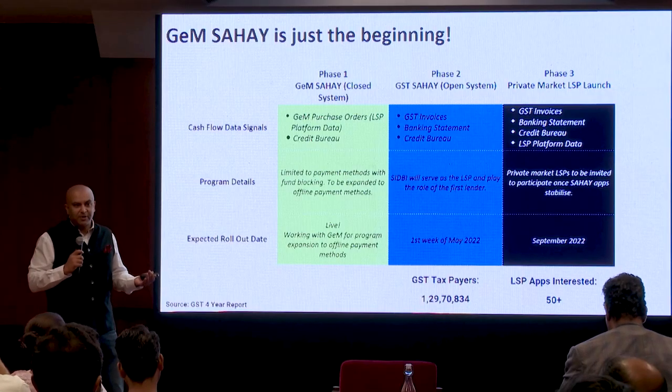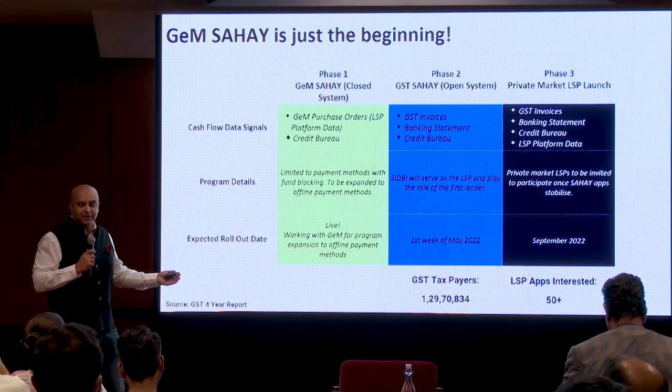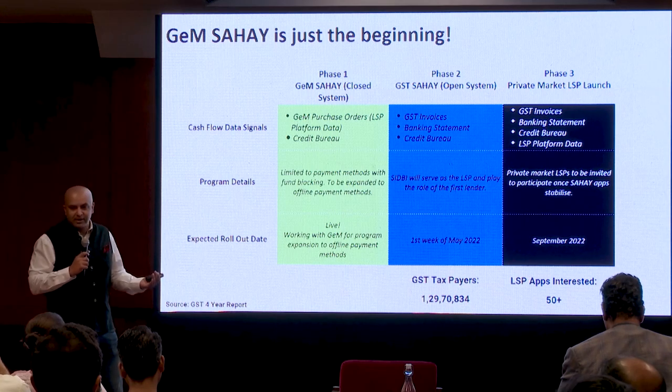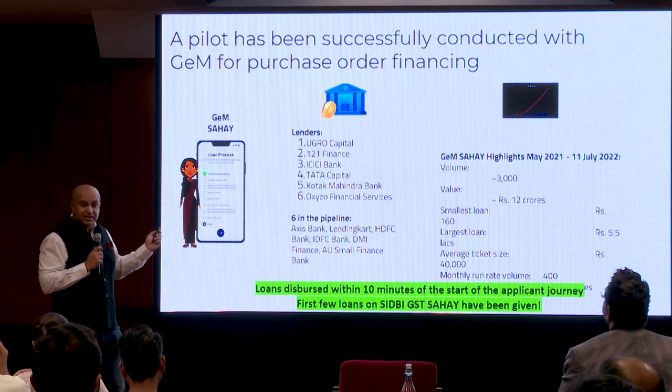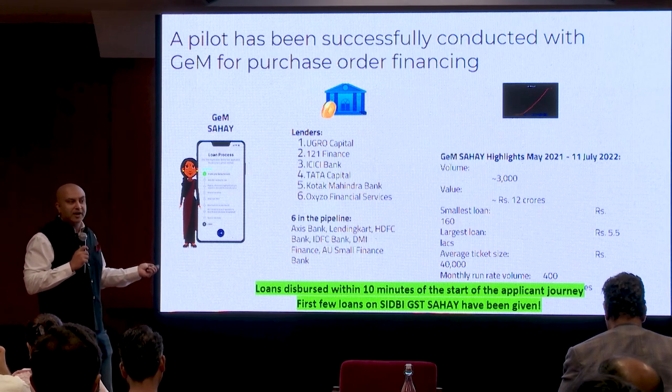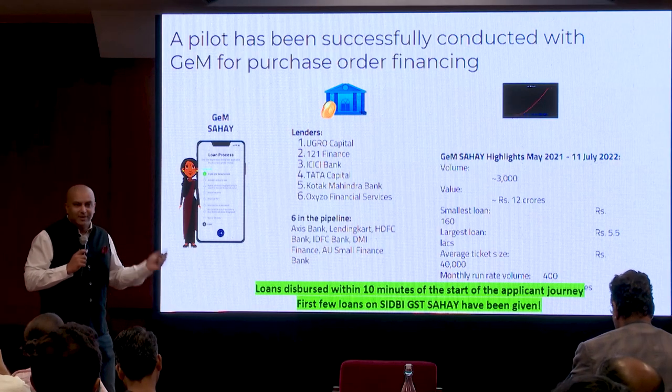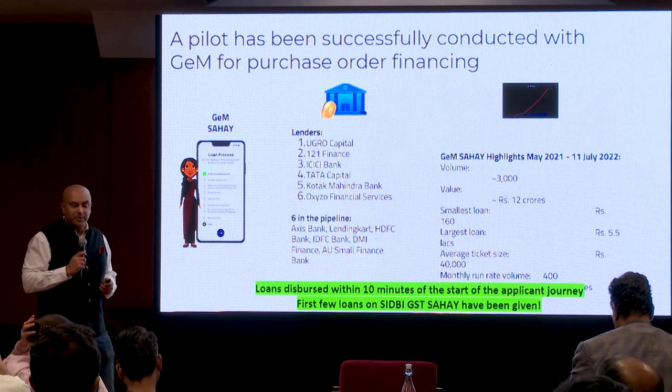No matter how weird or difficult the use case, we'll give it a shot — even if it's low probability. We get support from policymakers because this is an ignored segment of society. We've had requests for retail, but we won't touch it unless it's microcredit or MSMEs. The smallest loan we've done on GEM Sahai is 160 rupees, the largest is 5.5 lakhs, and the average ticket size is 40,000 rupees. Numbers are small — only 3,000 loans so far, 12 crores in total — but NPAs have been sub 3%, and for prudent lenders it's less than 1%. Strangely, it is working.